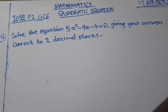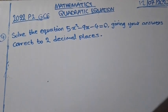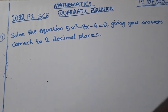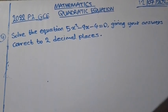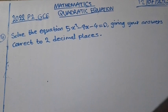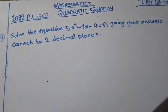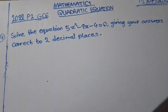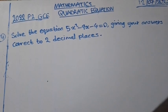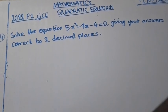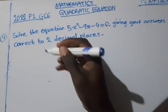The question goes as follows. Solve the equation 5x² - 9x - 4 = 0. Give your answers correct to 2 decimal places.